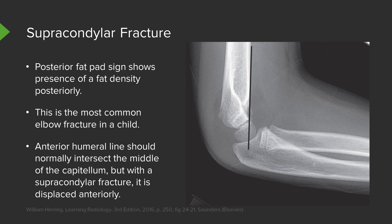Another way of identifying a supracondylar fracture is to draw an anterior humeral line. This line should normally intersect the middle of the capitellum. As you can see here, this line actually intersects the anterior aspect of the capitellum, indicating slight displacement, which is another way of looking for a supracondylar fracture.